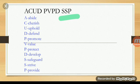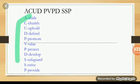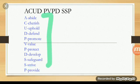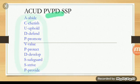In this mnemonic, A stands for abide, C for cherish, U for uphold, and D for defend. Likewise, you need to remember one key word for each letter. It is easier to remember these one-word tricks than to learn all the duties directly.